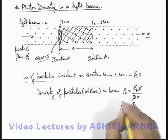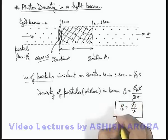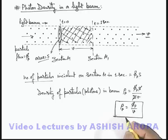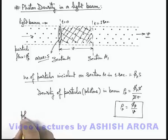This is quite a useful relation. You must be careful that at any point in a light beam, if photon flux is phi p, the photon density can be directly given as the ratio of photon flux to the speed of photons at which these are traveling.